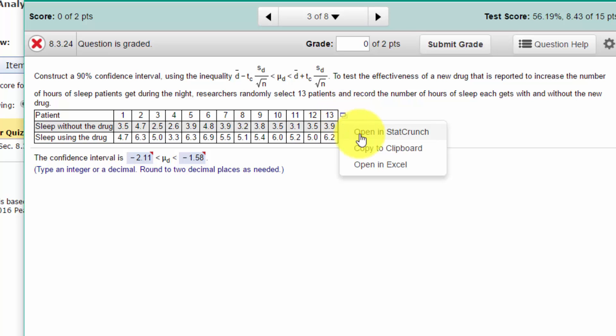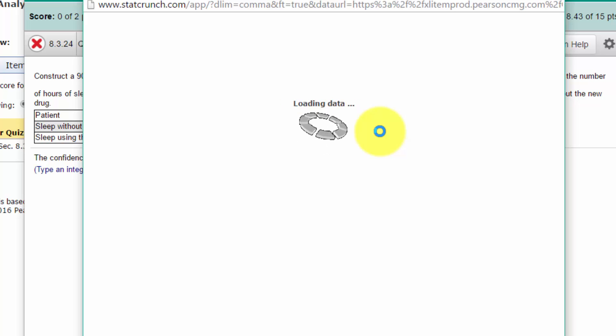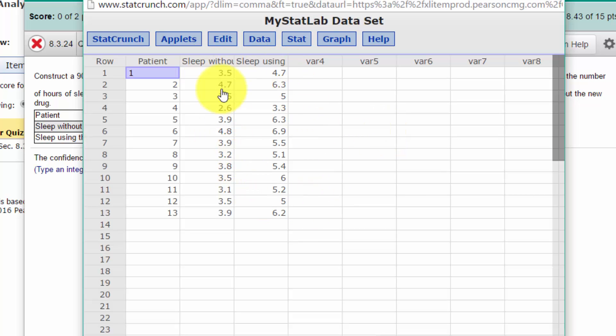I'm going to click on open StatCrunch. If StatCrunch was not available, I think it is. If you've got this little icon in MyStatLab even on quizzes, you should be able to open StatCrunch. And it loads the data there.